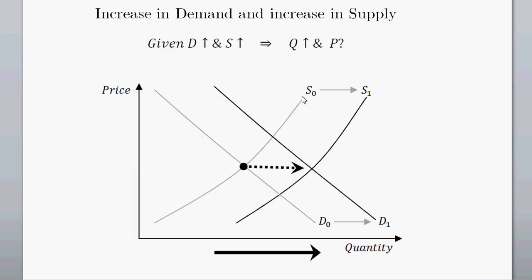Putting it all together with an increase in demand and an increase in supply — from S sub nought to S sub 1, and D sub nought to D sub 1 — the new equilibrium quantity is definitely higher than the initial one. However, the effect on price is unknown, because it depends on the elasticities of the curves and the strength of the shifts.